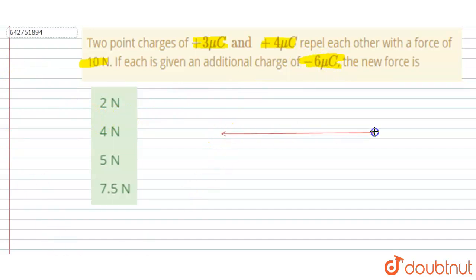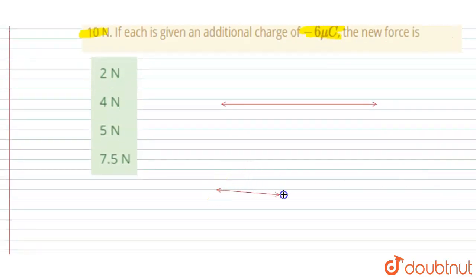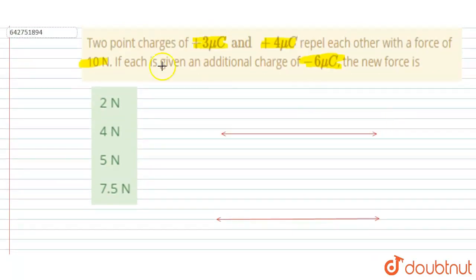Now they are given -6 charge additional charge, then you have to find out the force. The distance is r, and this is r, and initially the charges were 3 and 4.